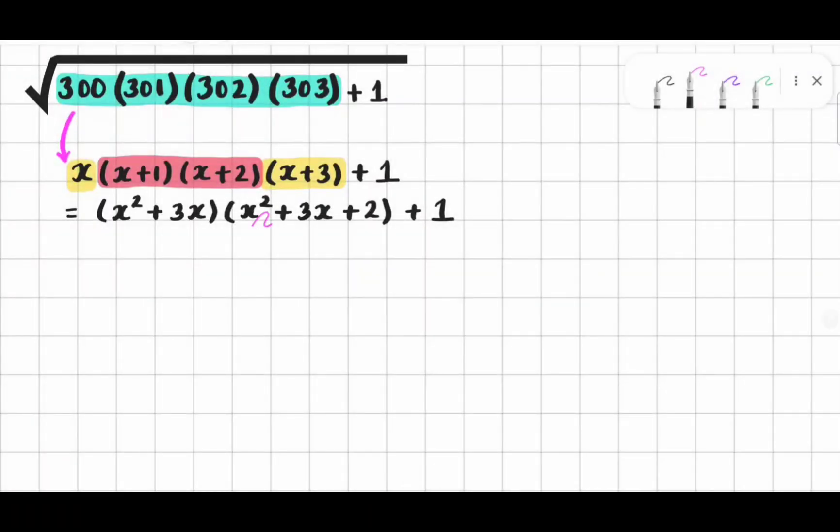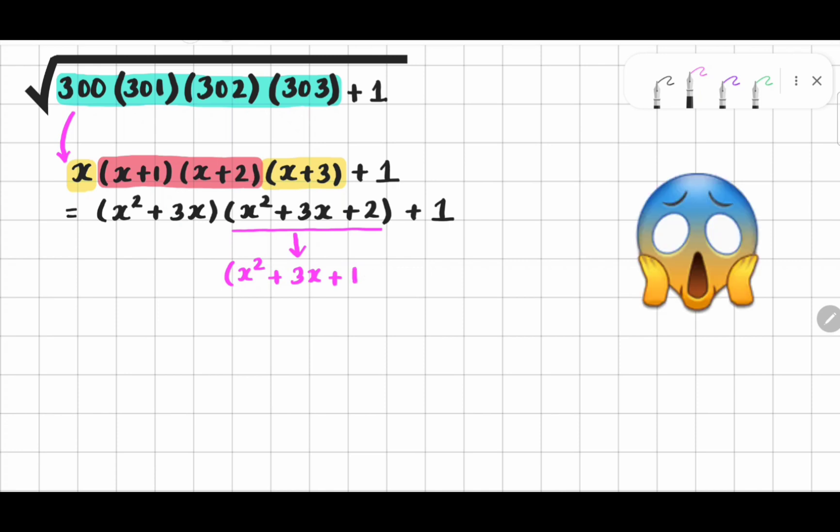After this, I am going to rewrite this factor with some adjustment like x square plus 3x. Then, we all know that 1 plus 1 equals 2. So we can write 2 as 1 plus 1. Now, I am going to distribute this factor to these terms.